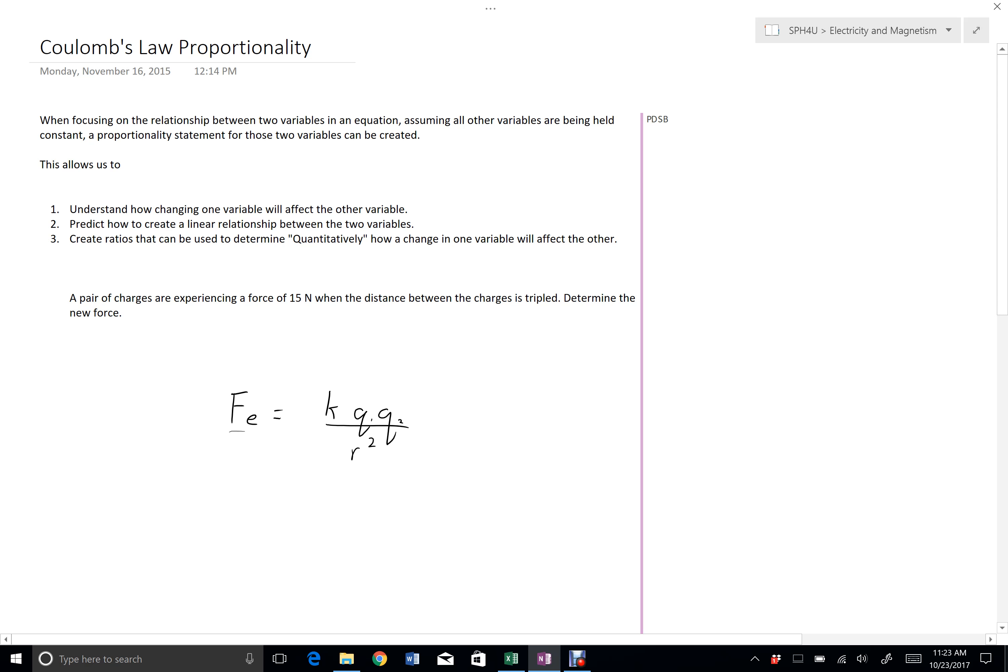So for example, let's say we're going to change q2, then we can sort of ignore all this other stuff and write this as a proportionality statement. Now, based on this proportionality statement, we can see there's a linear relationship between FE and q2, which means that if I plotted FE and I plotted q2, since it's to the power 1, the resulting graph would be a straight line.